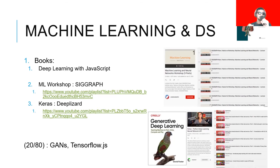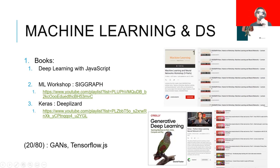For machine learning and data science, I've started reading the book Deep Learning with JavaScript. I'm about 30% through and I want to finish it. It has really good explanations with code — highly recommended.